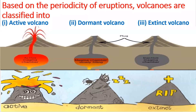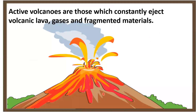Based on the periodicity of eruptions, volcanoes are classified into active volcano, dormant volcano and extinct volcano. Active volcanoes are those which constantly eject volcanic lava, gases and fragmented materials. Otherwise we can also call them living volcanoes.